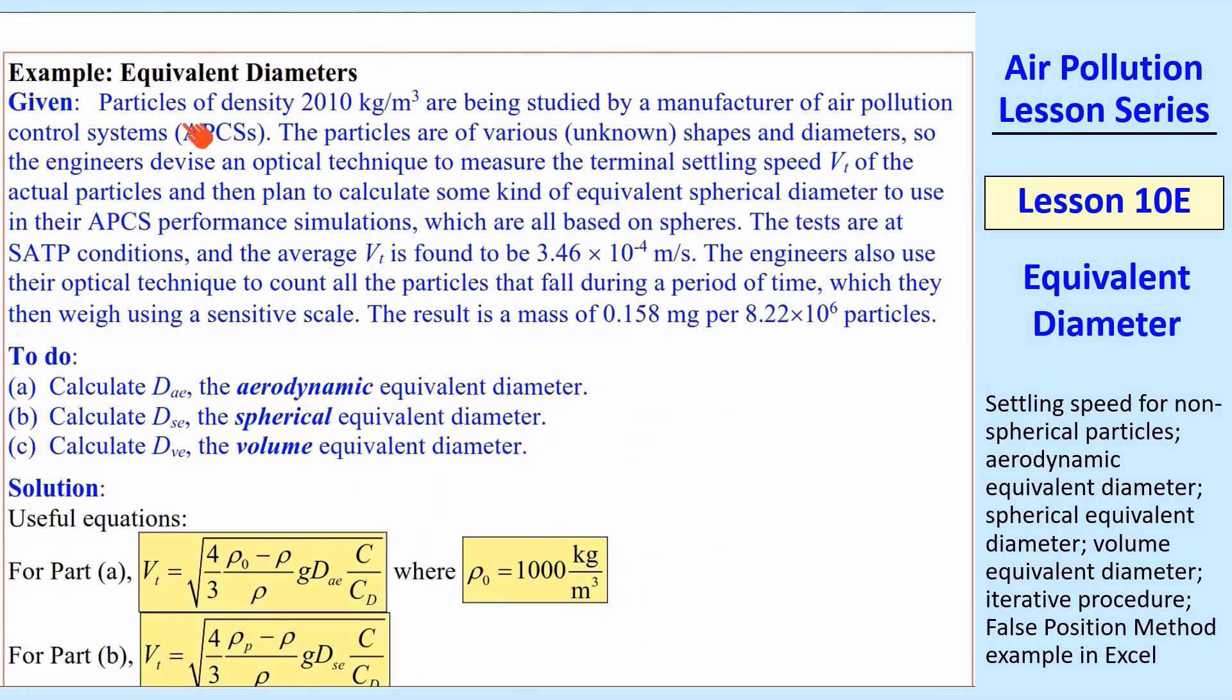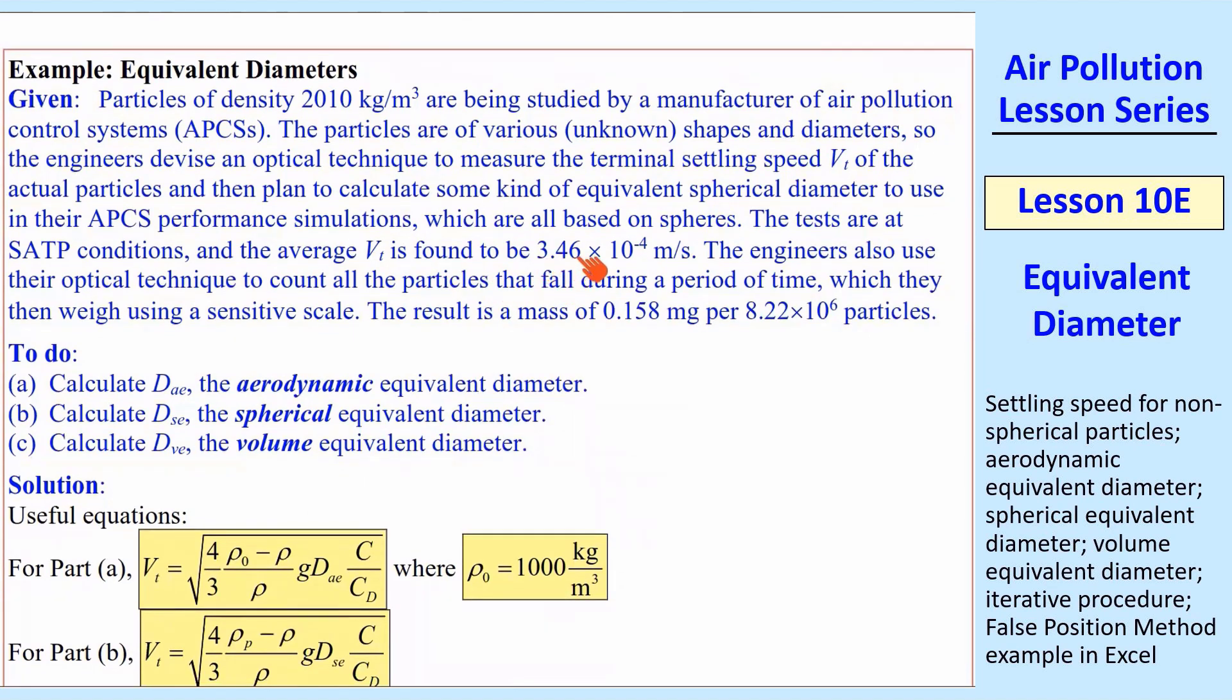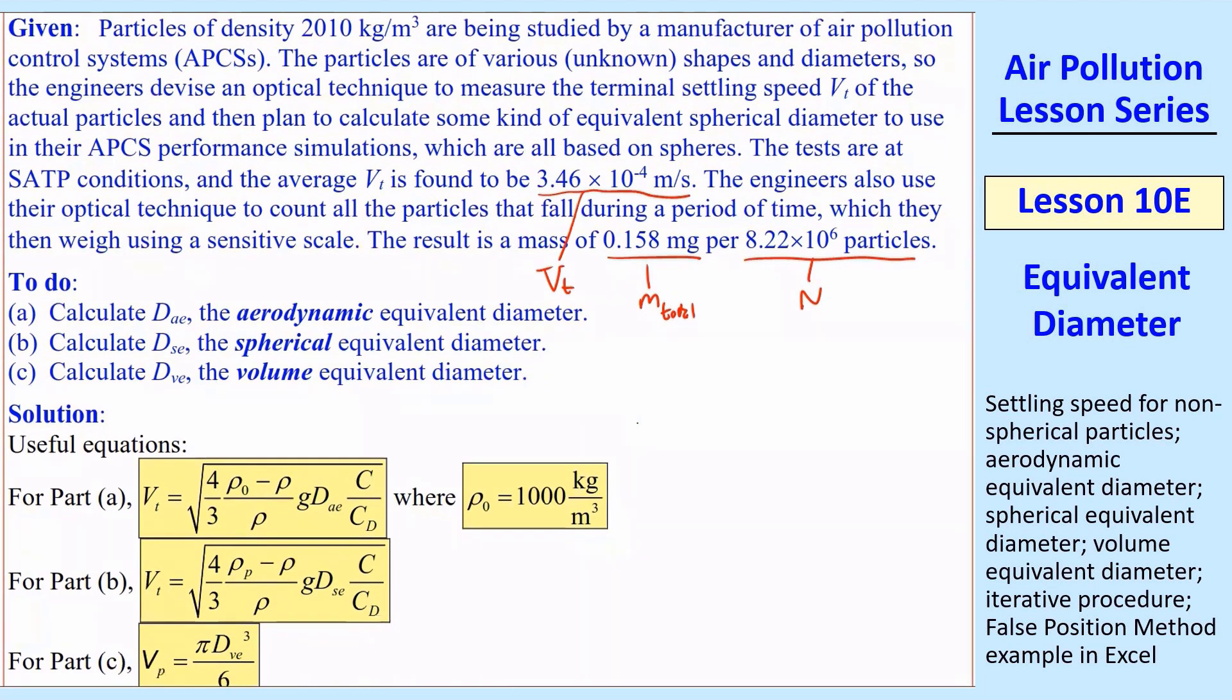Now let's do an example. Particles of density, I give a density, and we're using equivalent spherical diameters. We're going to actually calculate all three. These are SATP conditions. They measure the settling speed and find it to be 3.46×10⁻⁴ meters per second. They also count the particles that fall during a period of time, and they weigh them. The result is we have a mass per number of particles. This is vₜ. This would be our total mass, and this would be our number of particles that were measured. So we're going to calculate all three of these, aerodynamic, spherical, and volume equivalent diameter.